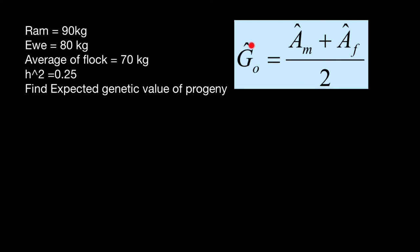We see that expected - so the hat here is expected. G stands for genotypic value of offspring. So expected genotypic value of the offspring equals the average of estimated breeding value of two parents.